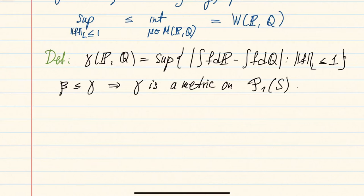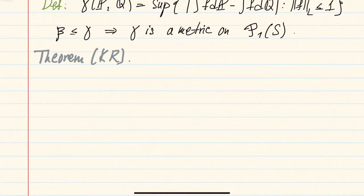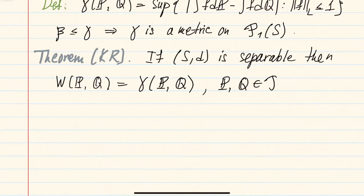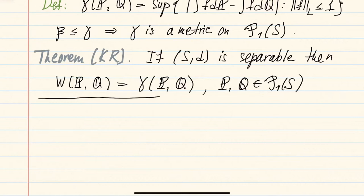The main result we are going to prove is the Kantorovich-Rubinstein theorem, which says that gamma and W are equal when we are on a separable metric space. So if (S, d) is a separable metric space, then the Wasserstein distance between p and q equals this gamma metric for all p, q in P1(S). We already proved one inequality, so we just need to prove the other direction.